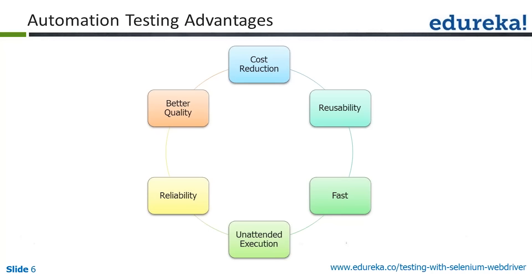Reliability is another key advantage. If you ask a person to do the same test steps repeatedly, after some time they will get bored and fatigue sets in — they might miss steps or skip things they feel are already working. An automation script does not do that. It doesn't get tired, doesn't have fatigue, doesn't get bored, and will perform each and every step. Whatever actions you have coded will be performed with guaranteed accuracy, leading to better quality overall.